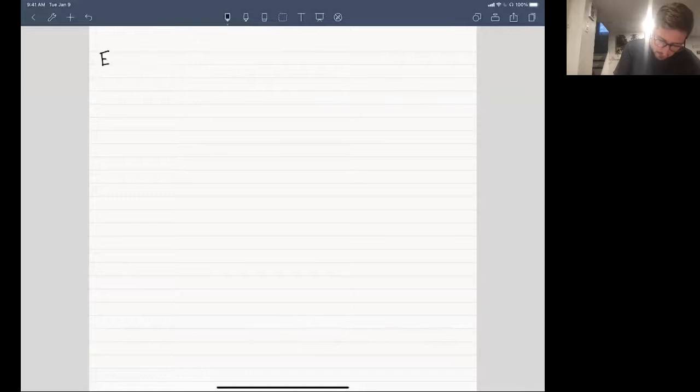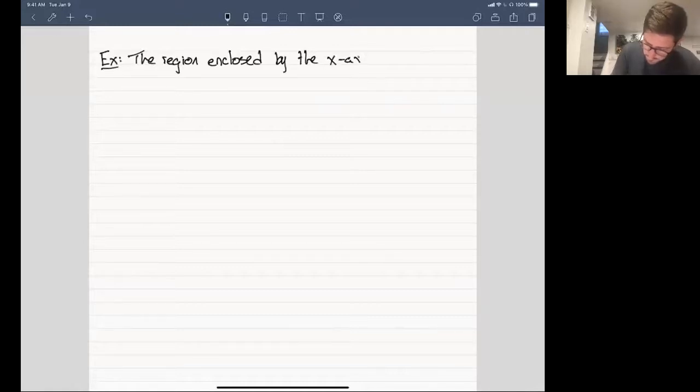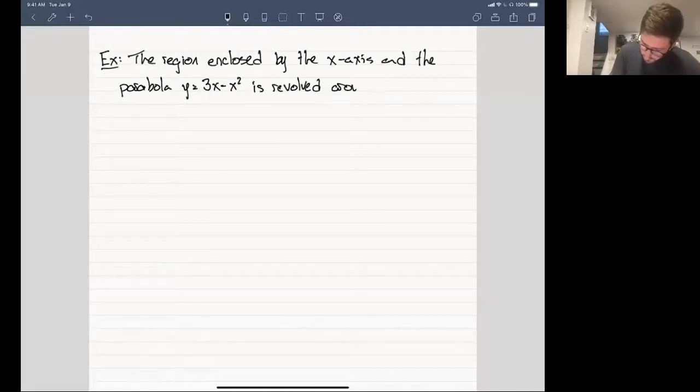So let's say I ask the following of you. The region enclosed by the x-axis and the parabola y equals 3x minus x squared is revolved around the vertical line x equals minus 1 to generate a solid. We're asked to find the volume of the solid.